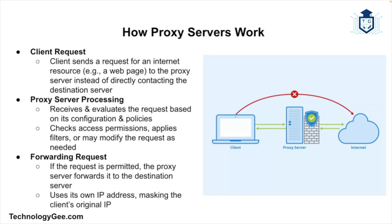So how does a proxy server work? The operation is broken down into several steps. Step one is the client request: when a client wants to access a resource on the internet, such as a web page, it sends a request to the proxy server instead of directly to the destination server. Step two is proxy server processing: the proxy server receives the client's request and evaluates it based on configuration and policies, which may involve checking access permissions, applying filters, or modifying the request.